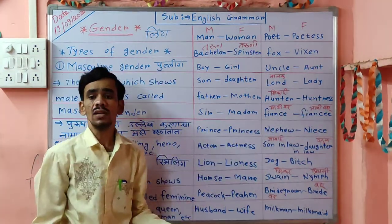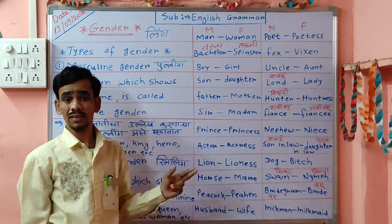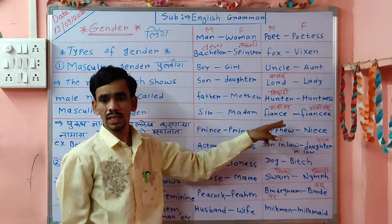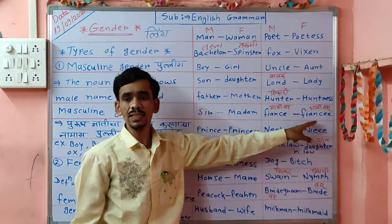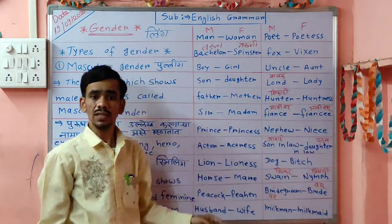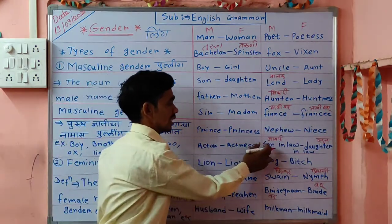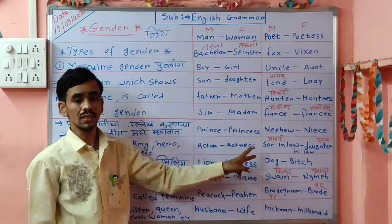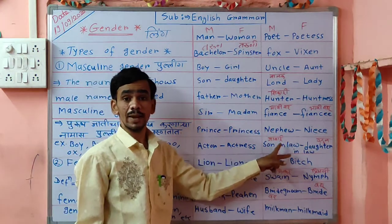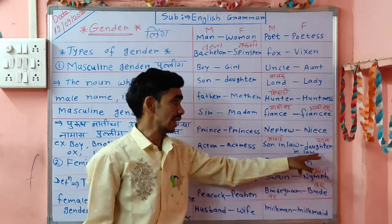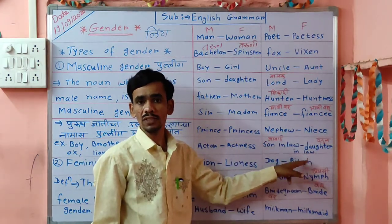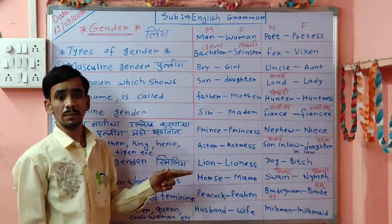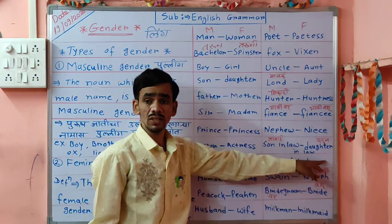Fiance means the one whose marriage will be arranged. Then daughter-in-law — if you are a girl, after marriage you become a daughter-in-law of some family. So daughter-in-law means Sul in Marathi.